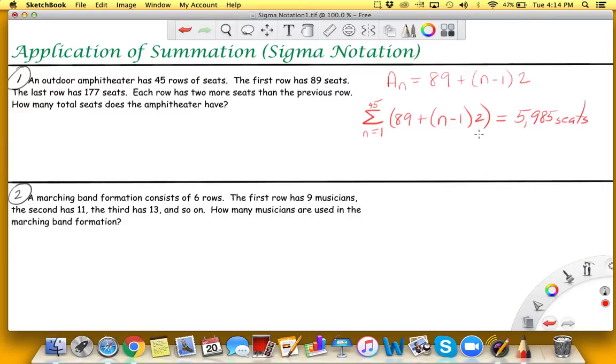Now when we look at the second example, it says a marching band formation consists of six rows. The first row has nine musicians, the second has 11, the third has 13, and so on. How many musicians are used in the marching band formation? Once again this is arithmetic because if you look at the pattern, they start out with nine, add two to get 11, add two more to get 13, and so on and so forth.